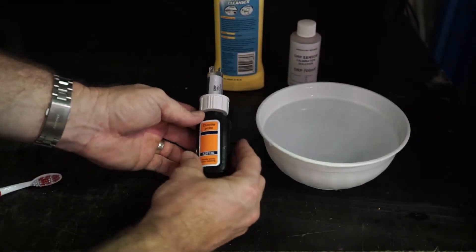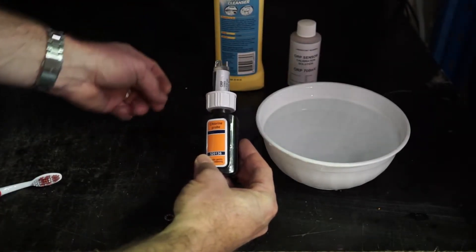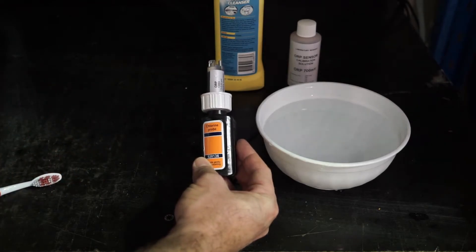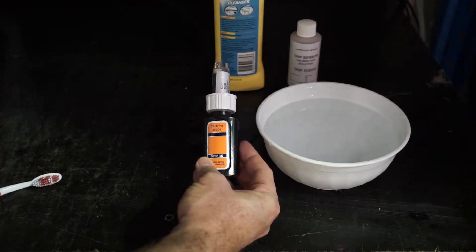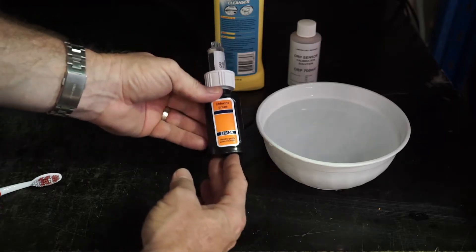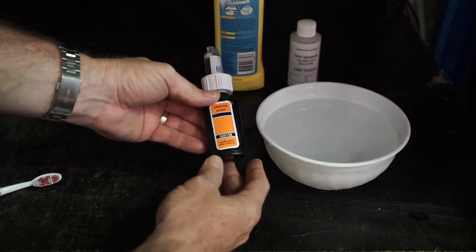Okay, so after servicing our Astral Pool Viron Equilibrium Chlorinator, replacing our acid squeeze tube, cleaning and calibrating our pH probe, we're now going to clean and calibrate our Gold Tip Chlorine Probe.